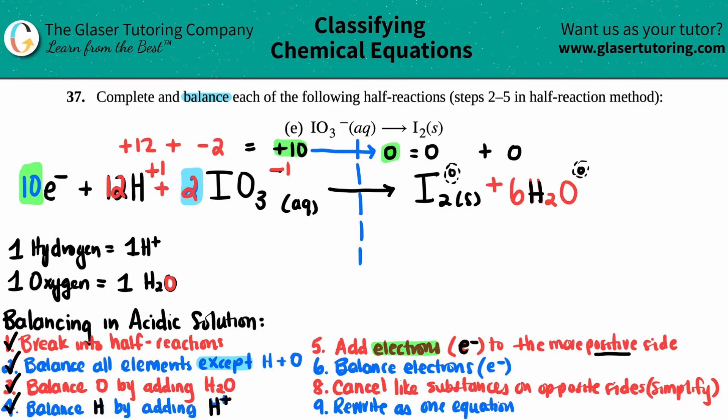You're done. The final answer, we completed and balanced this half reaction. It would just be 10 electrons plus 12H⁺ plus 2IO₃ aqueous, we have I₂ which is a solid, and then 6H₂O. And that's it. That is the final answer. Hopefully this helped. Just make sure that you know the steps and in the order that they're stated because that's going to help you out a lot.